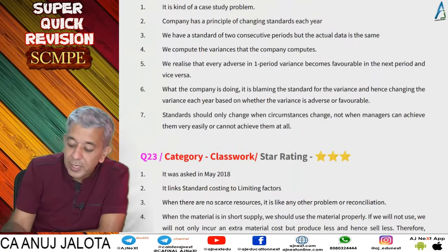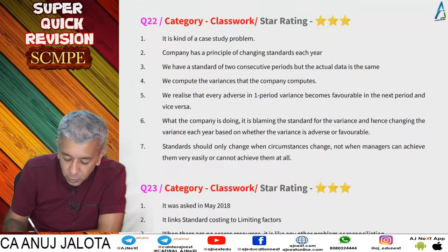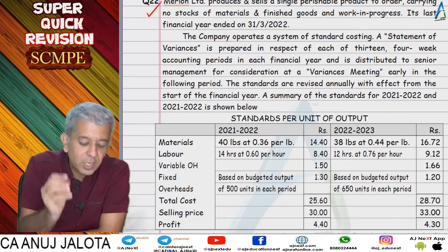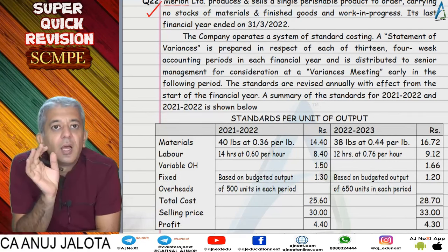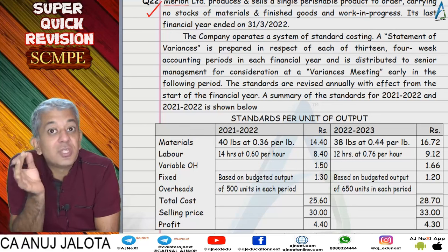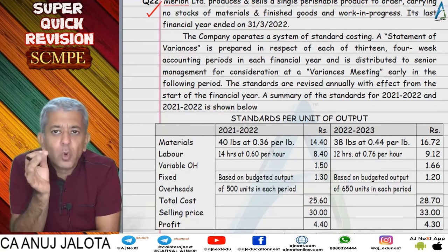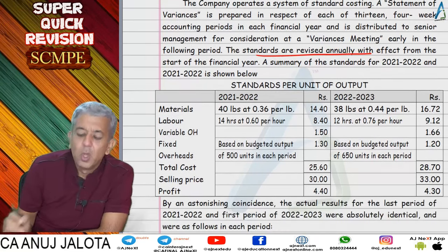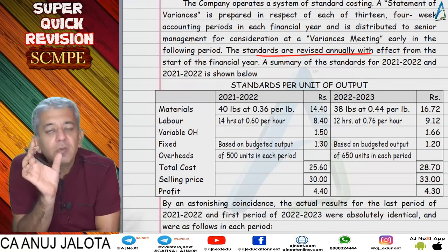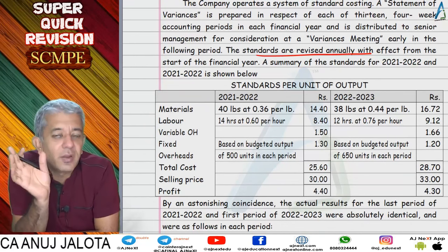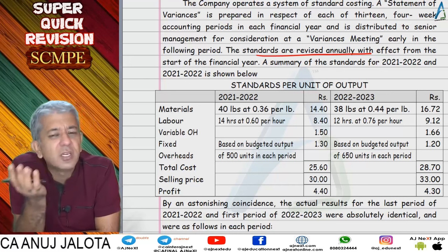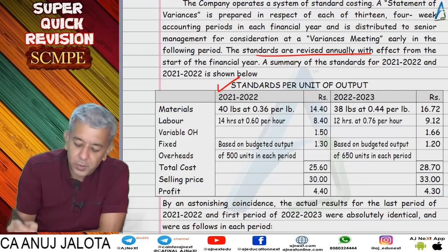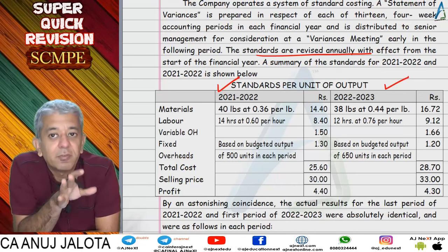Question 22 was a case study question. The company tries to change its standard each and every year. Data was given for the full year divided into thirteen four-week accounting periods. Since standards change, two sets of standards were given — for period 22 and 23 — but the actual data for both periods was identical. So whatever actual results existed, first year's last four weeks and next year's first four weeks were the same — a common data.